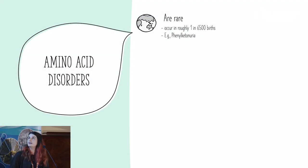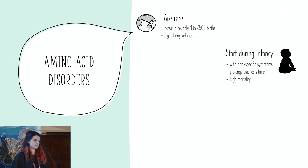So train analogies aside, these are serious, debilitating diseases. Overall, amino acid disorders occur in about 1 in 6,500 births. And you might have even heard of some of the more prevalent ones, like phenylketonuria. And they often start during infancy. So infants suddenly start showing very general symptoms, like weakness, dehydration, or lethargy, and this prolongs diagnosis time.